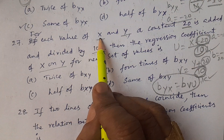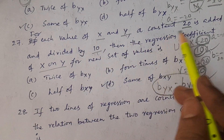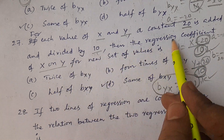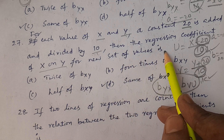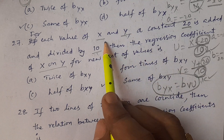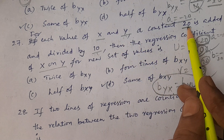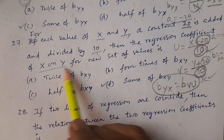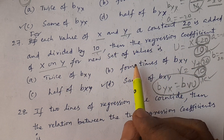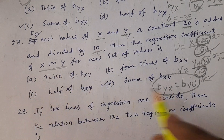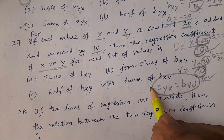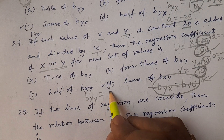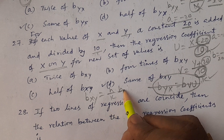For each value of x and y, a constant 20 is added and divided by 10, then the regression coefficient of x and y for the new set of values — every value of x and y, a constant 20 is added and divided by 10.